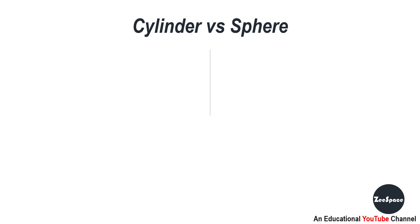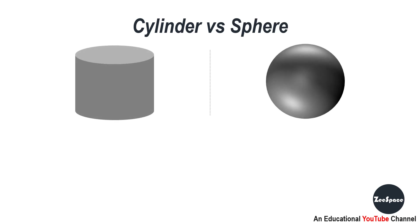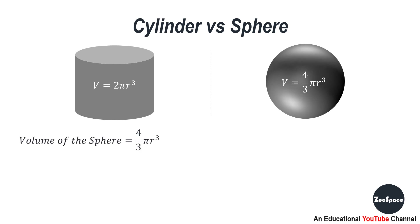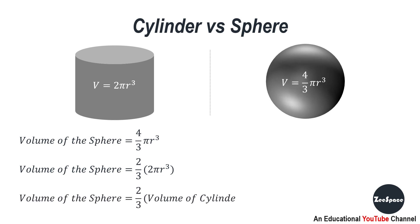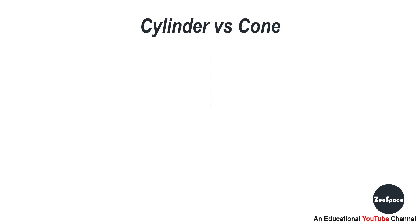Comparison between volumes of cylinder, sphere and cone. Cylinder versus sphere: volume of cylinder equals 2 pi r cubed and volume of sphere equals 4/3 pi r cubed. We can write the volume of sphere as 2/3 times 2 pi r cubed. Hence, volume of sphere equals 2/3 times volume of cylinder. It means the volume of the sphere is two-thirds the volume of the cylinder.